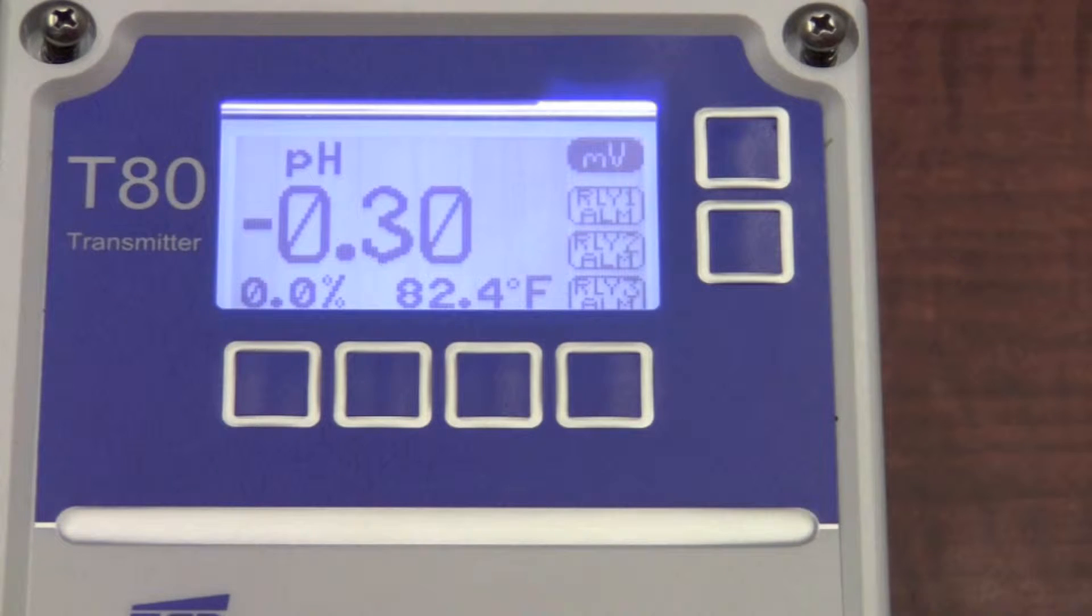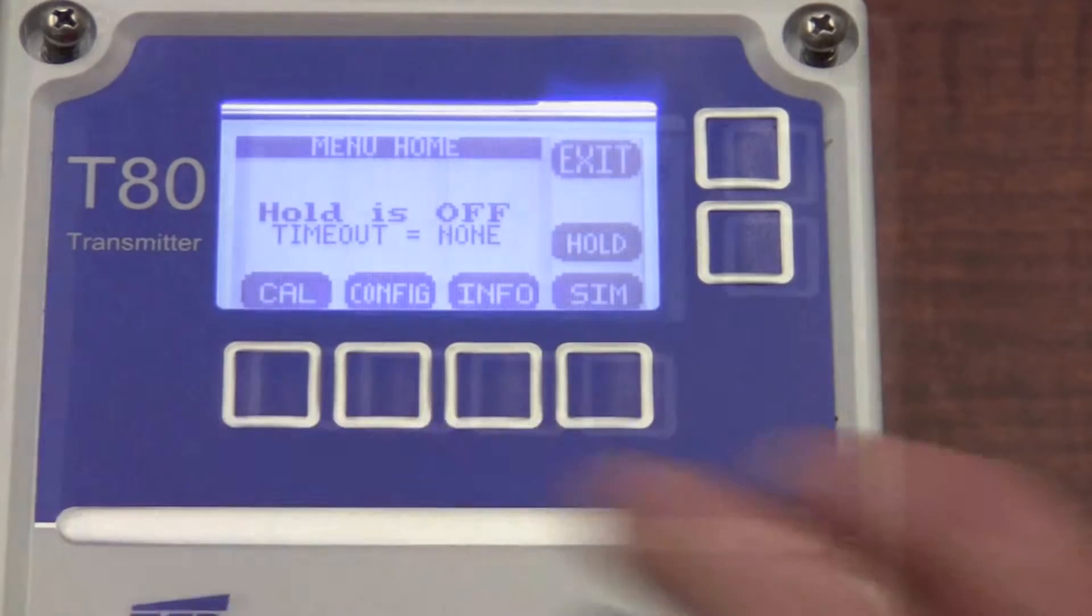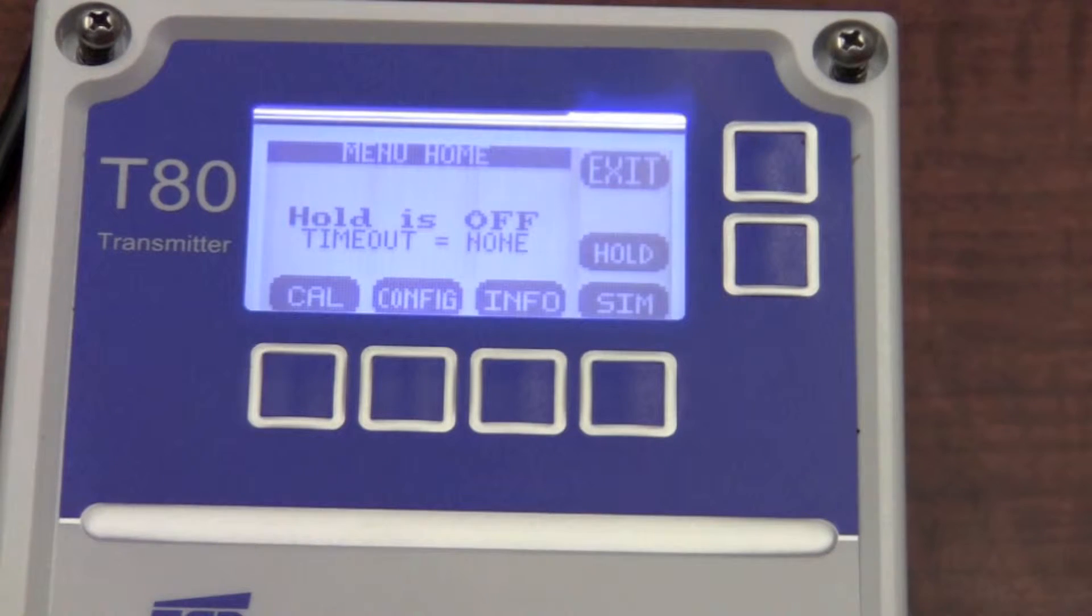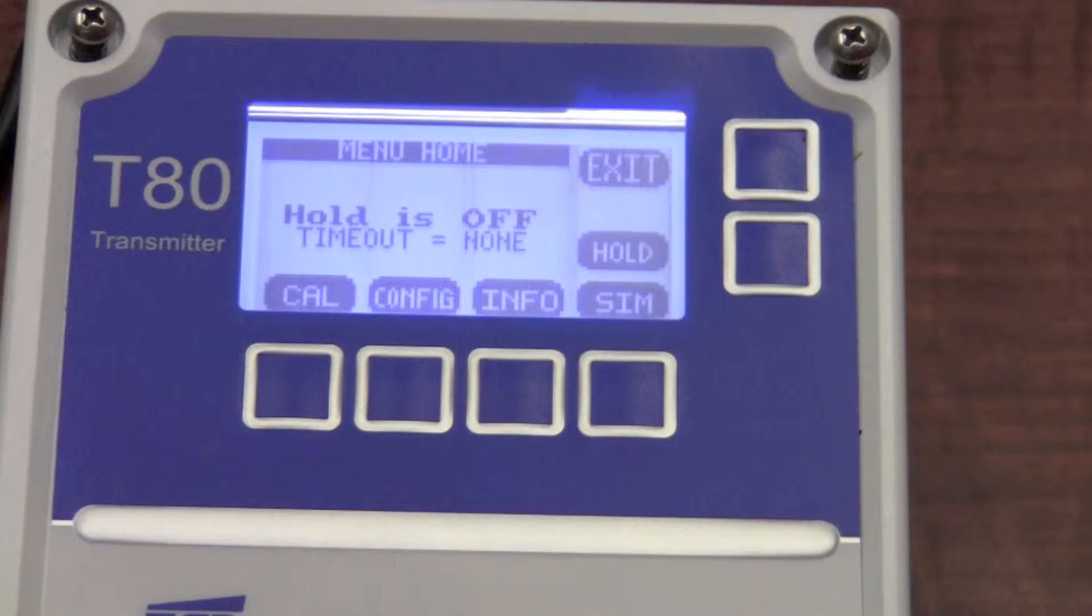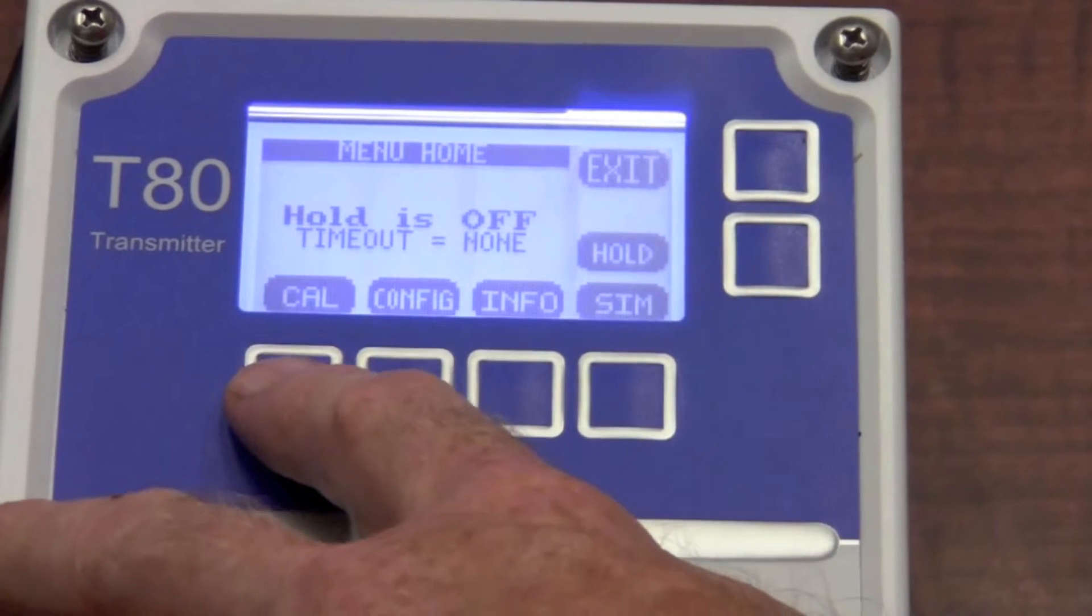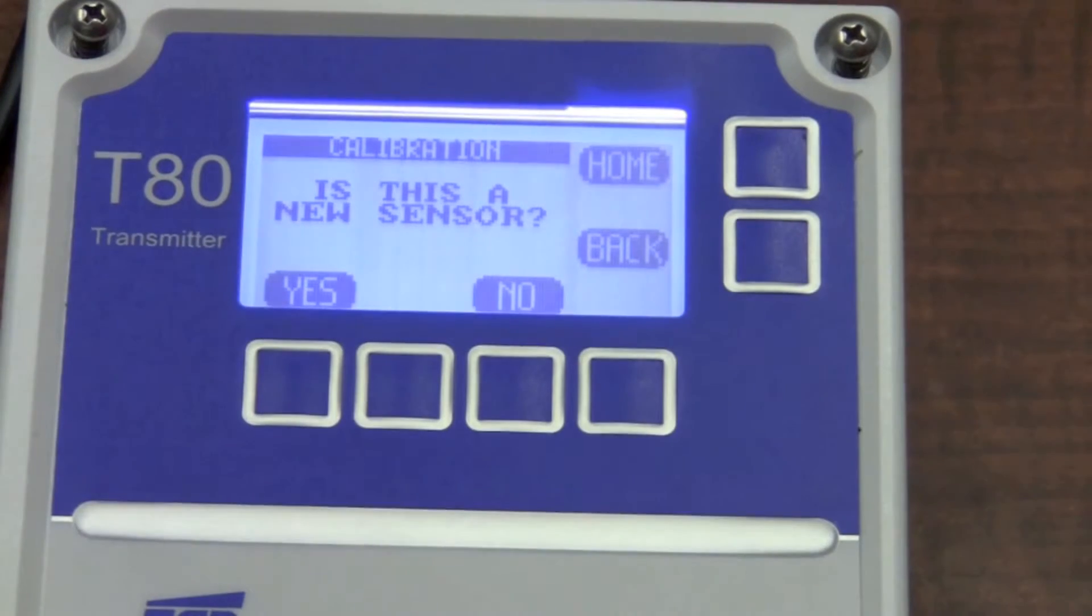Now, on the front of the display, I have four keys, and they become soft keys. Hitting any one of those keys twice in succession puts it into the configuration menu. After depressing the button twice, I have definitions for each of the four soft keys. For our intents and purposes, we're going to cover the calibration. By depressing the far left-hand key for calibration, it's going to ask me if this is a new sensor.